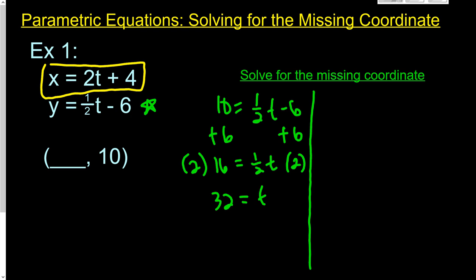So x equals 2 times 32 plus 4. And as long as you do your order of operations correctly, you're good to go. 2 times 32 is 64, 64 plus 4 is 68.